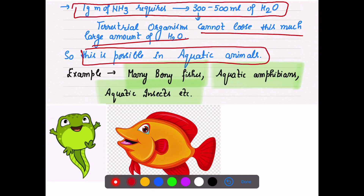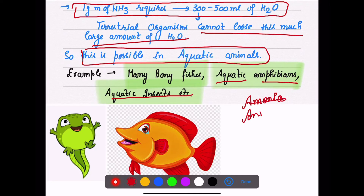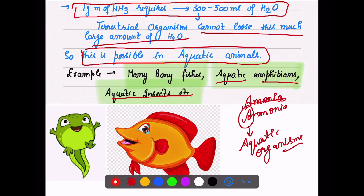Aquatic animals — bony fishes, aquatic amphibians, and aquatic insects — are examples of ammonotelic organisms. To remember this: A for ammonia and A for aquatic organisms. So in your exam, you can easily write that examples of ammonotelic organisms are bony fishes, aquatic amphibians, and aquatic insects. Everything starts with A — A for ammonia, A for aquatic.